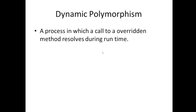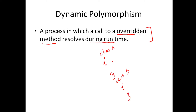But what is dynamic polymorphism? A process in which a call to an overridden method results during runtime. So it's all about an overridden method. Say if I have class A and class B, with a display method in each. Class B extends class A — we are talking about inheritance. Whenever we talk about overriding, it involves inheritance. Overriding means giving a separate definition for the display method inside your subclass, or redefining a method from the superclass inside your subclass. That is overriding.